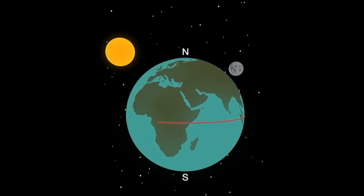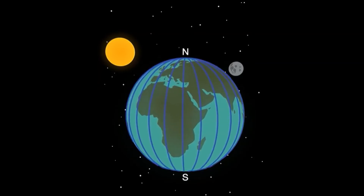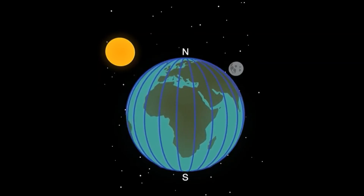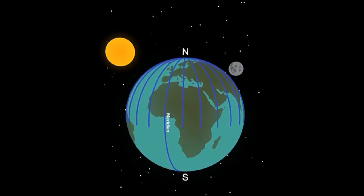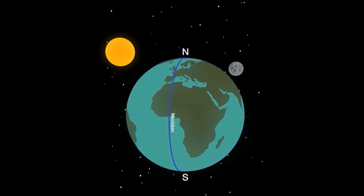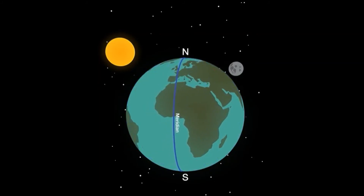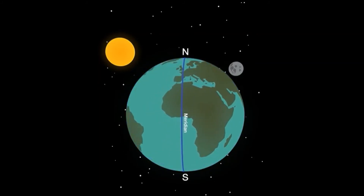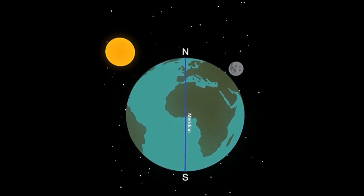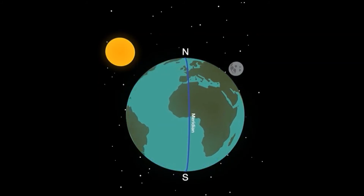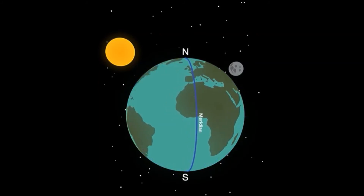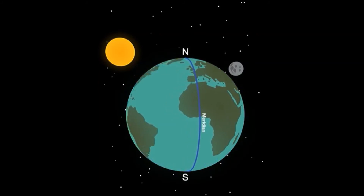Lines of longitude run vertically through the poles. Lines of longitude begin at zero degrees at the prime meridian and have designations of east and west.